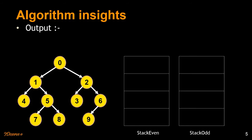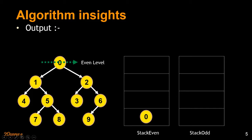Let's go through the algorithm step by step. I'm going to maintain two stacks: the even stack and the odd stack. The first level we are at is the even level. As soon as we are at that level, we traverse the nodes and push them into the corresponding stack — here we push zero into the even stack. At each level we pop out elements from the corresponding stack, so we pop out zero and print it out.